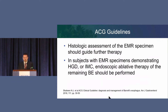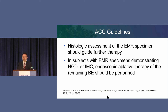Based on the histology, you decide what the next step will be. If you have a patient who undergoes an EMR for a lesion and it shows high-grade dysplasia or intramucosal cancer, and you've taken it out, then you proceed with other ablative modalities depending on what you have and what you think is the right thing.